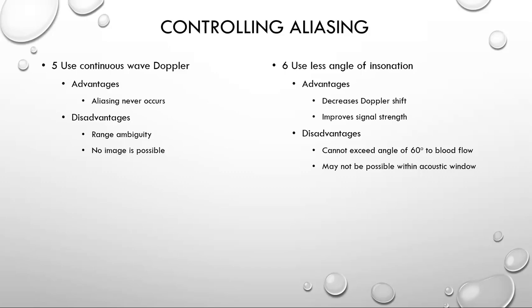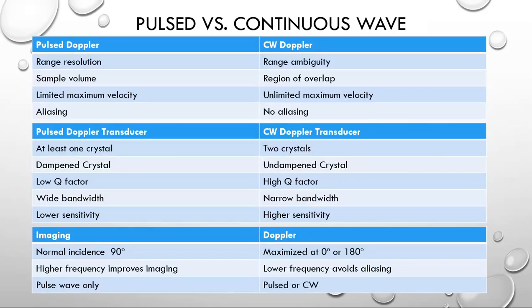Summarizing pulsed versus continuous wave ultrasound: pulsed ultrasound gives range resolution, has a sample volume, limited maximum velocity, and aliasing. It requires only one transducer, has a low Q factor, wide bandwidth, but lower sensitivity. Continuous wave always has range ambiguity, never has aliasing, requires two crystals, is undampened so it has a high Q factor and very high sensitivity.